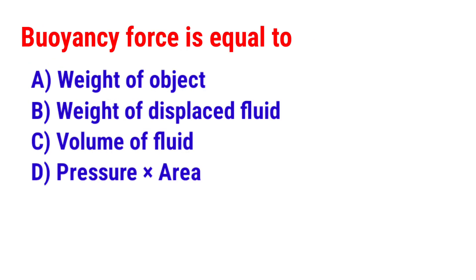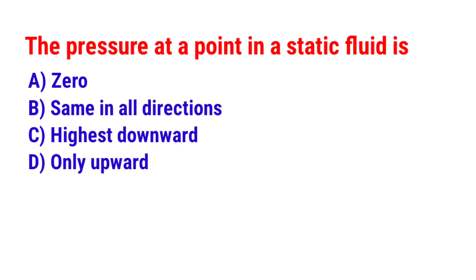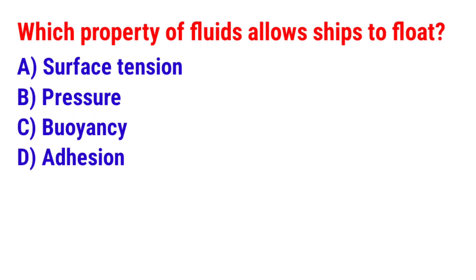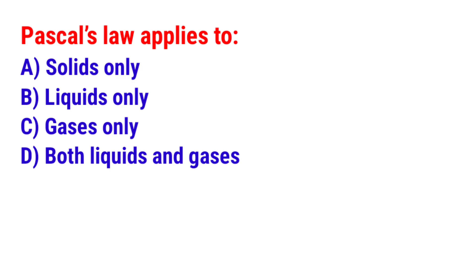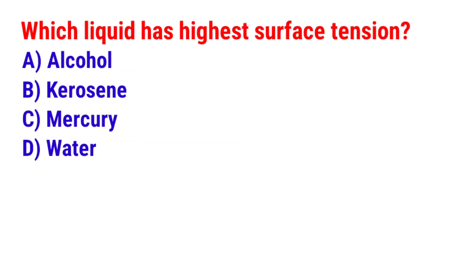Next question: Buoyancy force is equal to? The answer is option B — Weight of displaced fluid. Next question: The pressure at a point in a static fluid is? The answer is option B — Same in all directions. Next question: Which property of fluids allows ships to float? The answer is option C — Buoyancy. Next question: Pascal's law applies to? The answer is option D — Both liquids and gases. Next question: Which liquid has the highest surface tension? The answer is option C — Mercury.